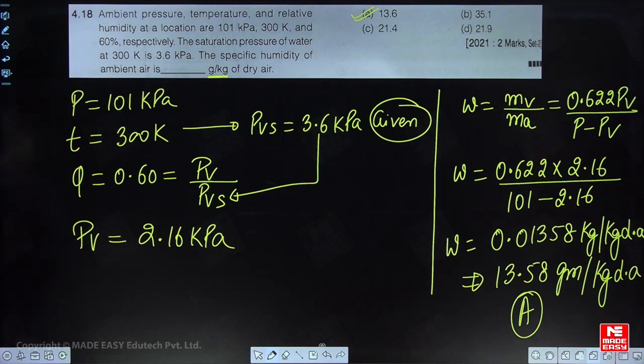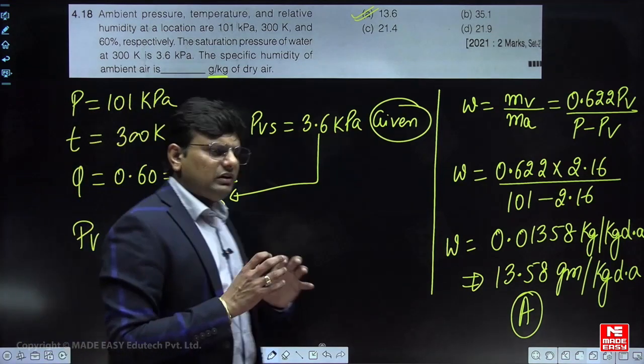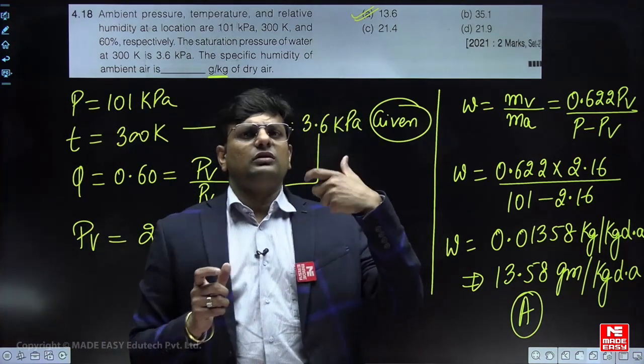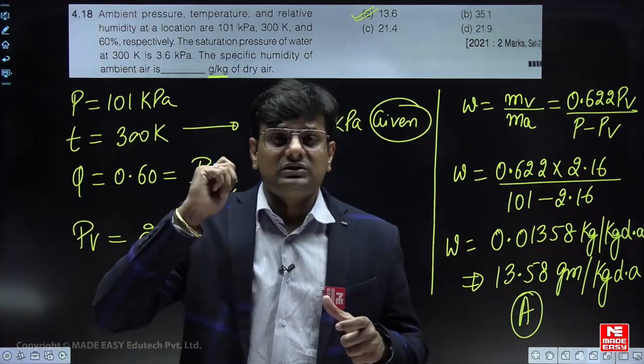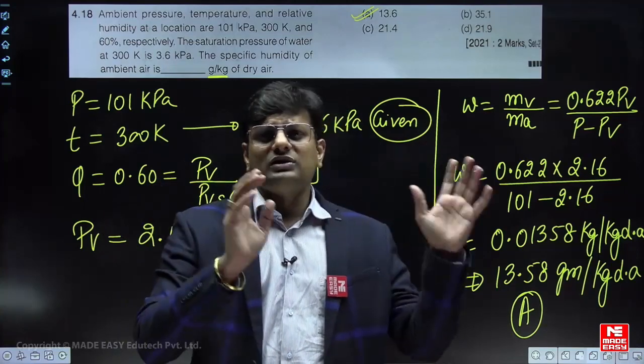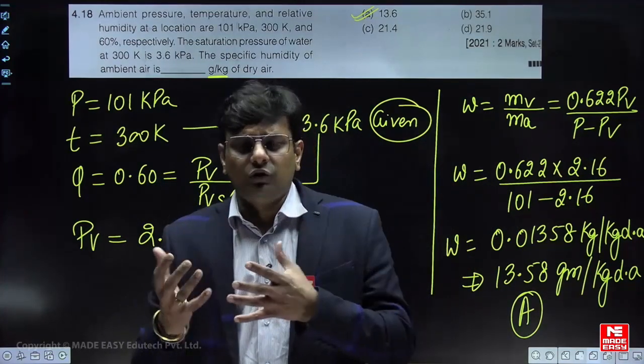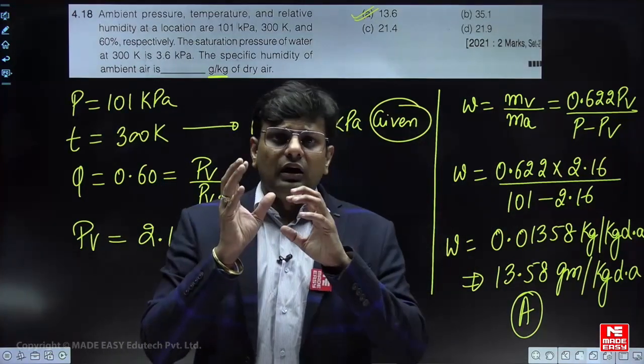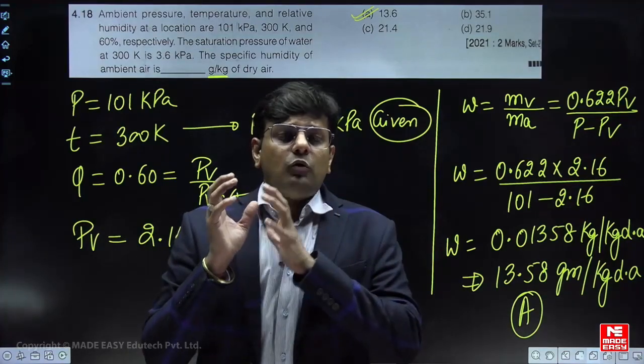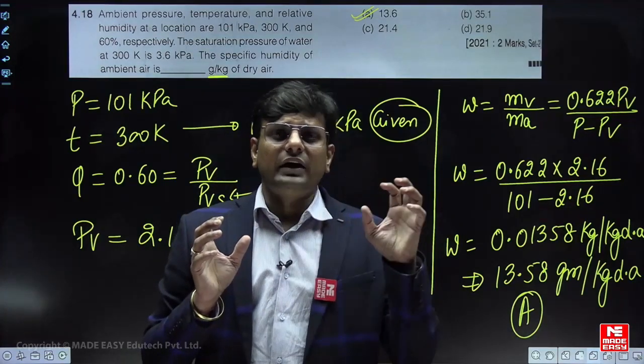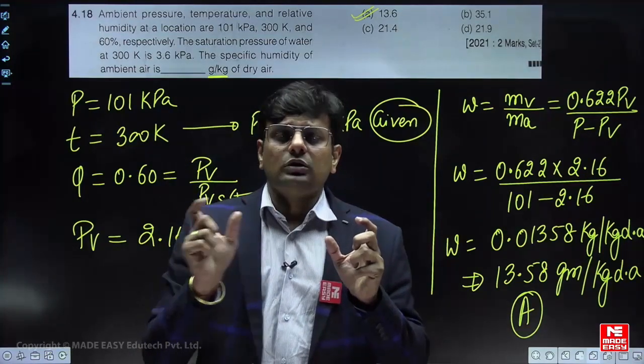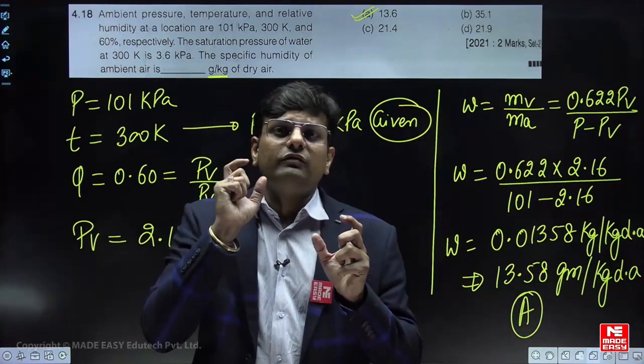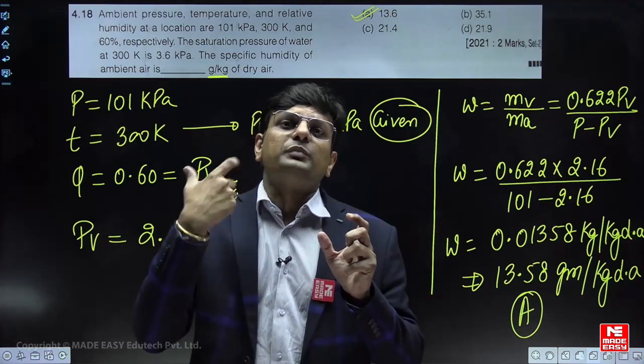It is a very favorite question and frequently they have asked this question many times. Sometimes they will give you the relative humidity and ask for specific humidity. Sometimes they will give you percentage humidity (degree of saturation) and then they will ask omega or phi. In these types of questions, the most important thing is you have to read the question carefully in such a manner that you have to find out the factor which helps to give the value of PV.